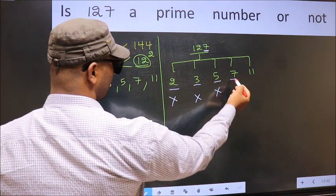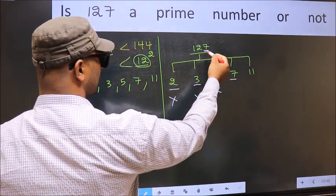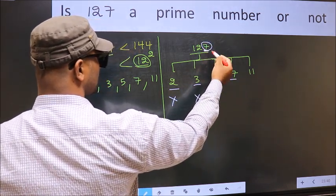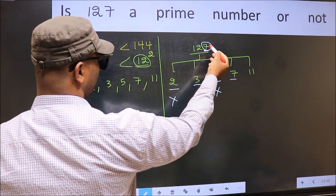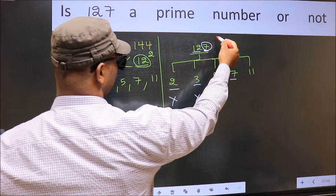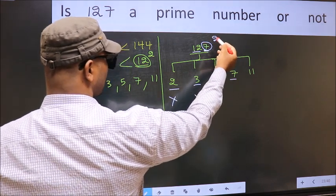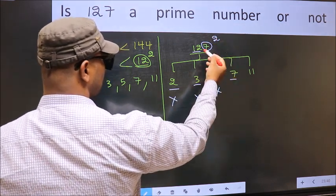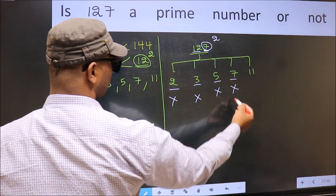Next number 7. To check divisibility by 7, you double this. 7 into 2, 14. Subtract from this. 14 minus 12, we get 2. 2 is not divisible by 7. So this number is also not divisible by 7.